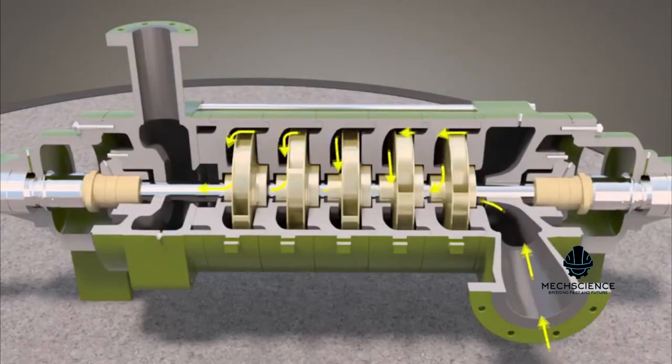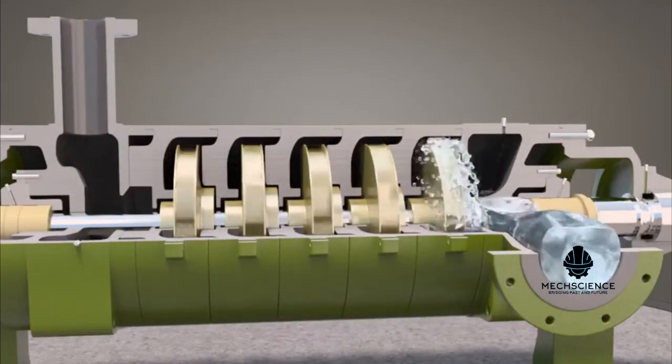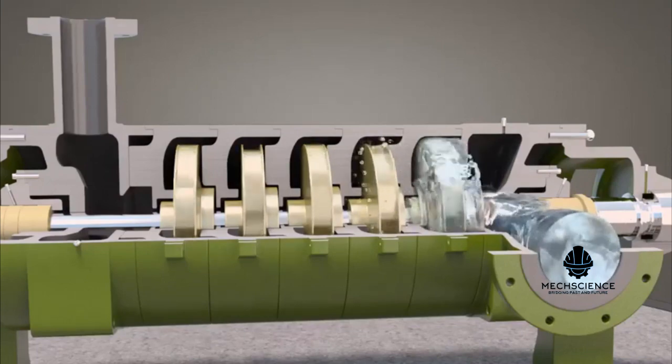Fluid exits the pump from the discharge port. Fluid enters the first chamber at suction line pressure and leaves the first impeller's outer edge at an elevated pressure.